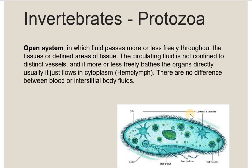In protozoans, there is an open circulatory system. This system is responsible for transporting different nutrients and excreting waste material. Blood vessels are not present, and hemolymph directly contacts different tissues in the body.